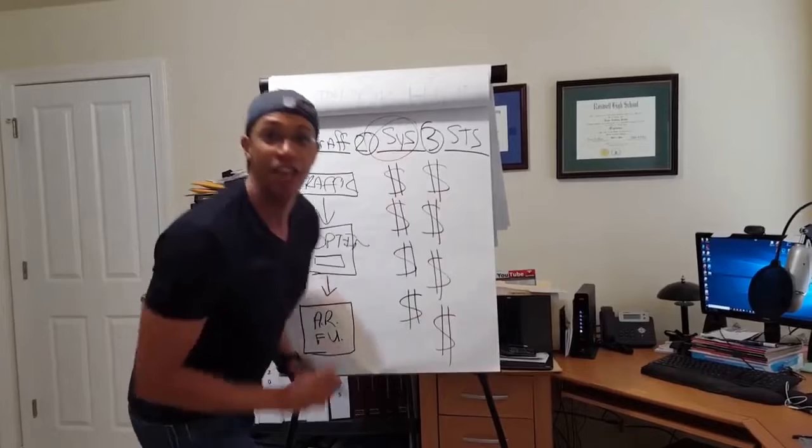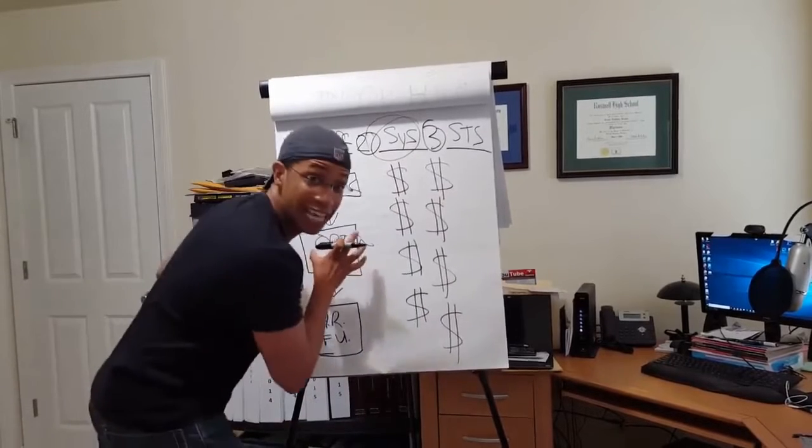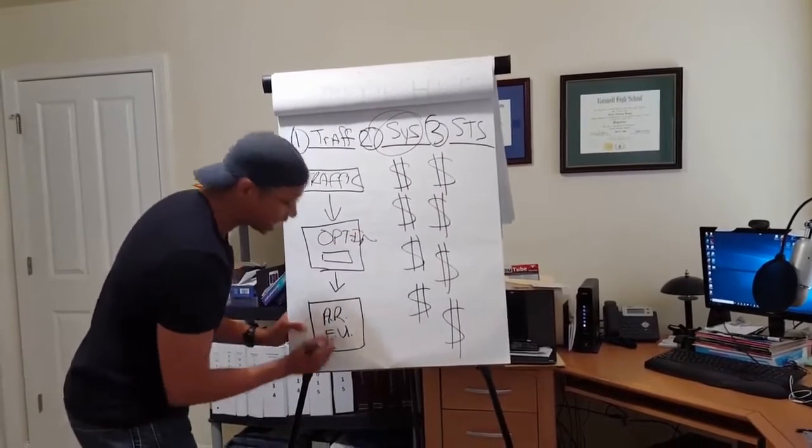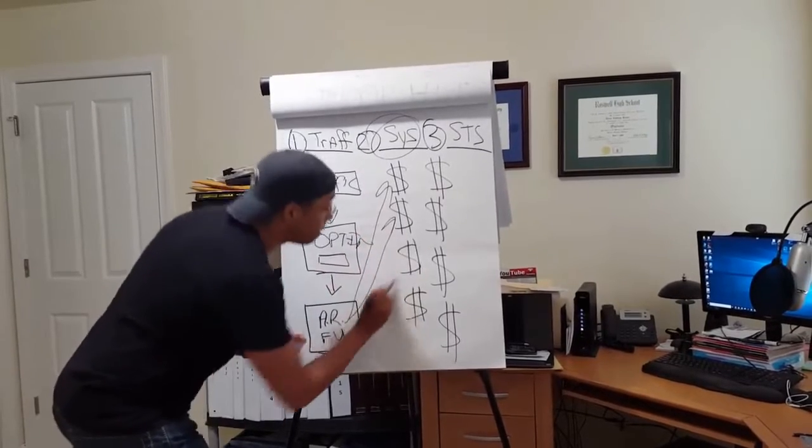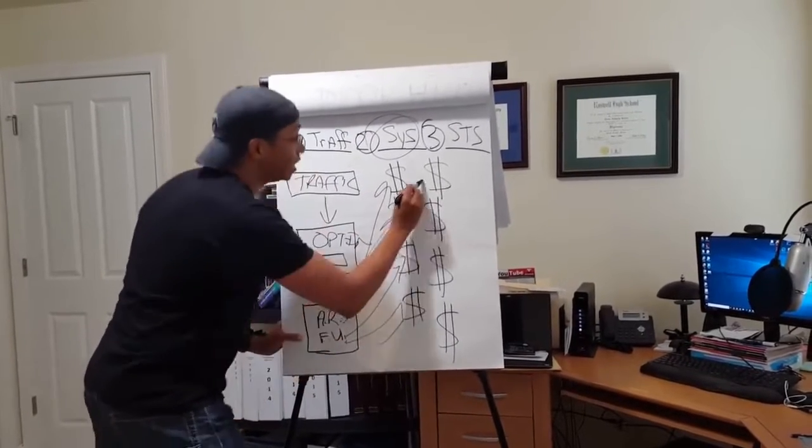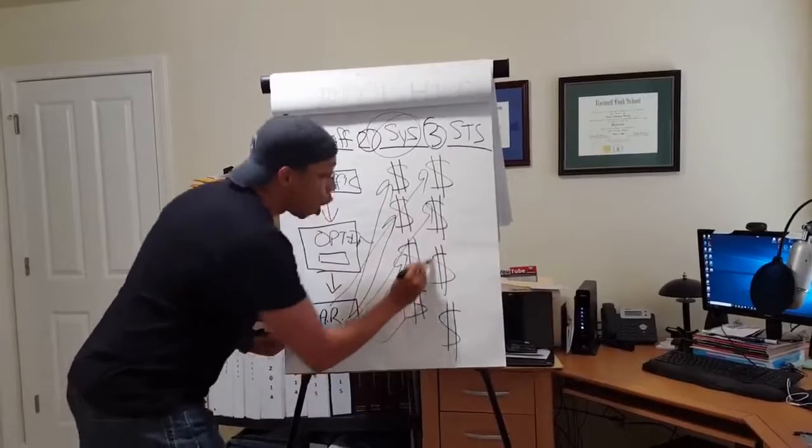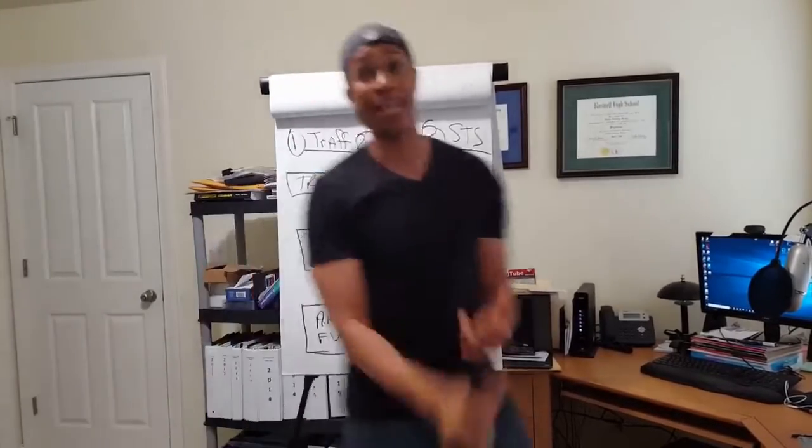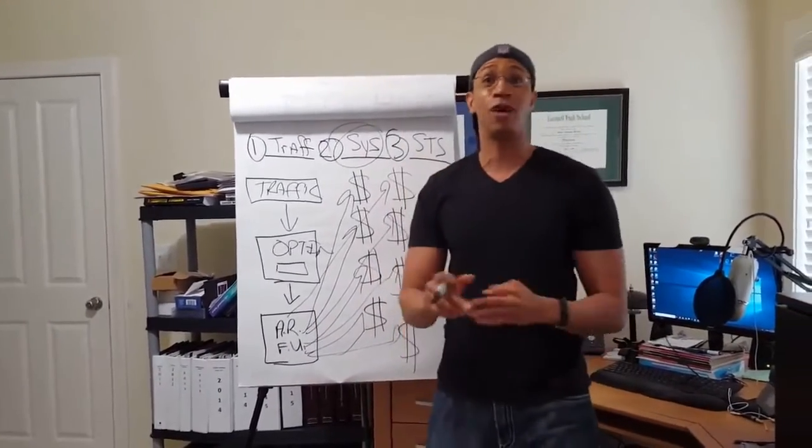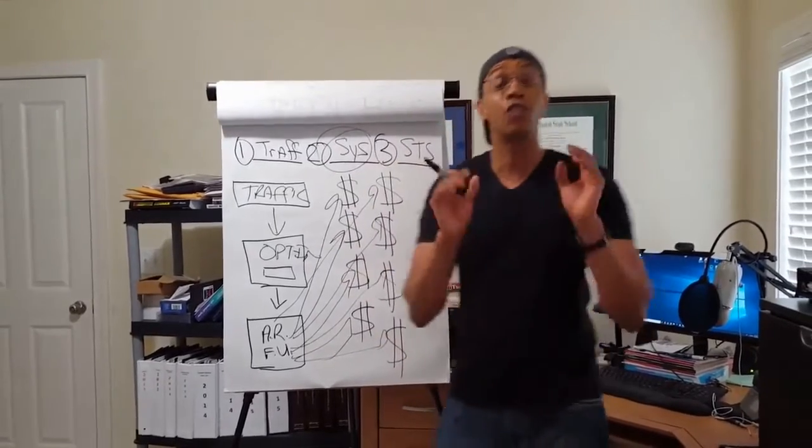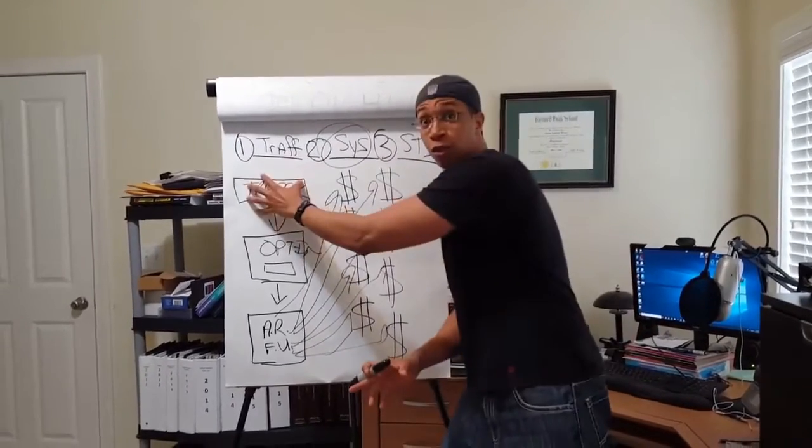And that solution is right here. The system. Once somebody gives me their email address, I set up a follow-up sequence that automatically, every week, promotes a different affiliate product to them on complete autopilot while I'm sleeping, while I'm hanging out with my friends, while I'm out with my loved ones, while I'm taking a nap. I'm making money because all I did was order traffic.